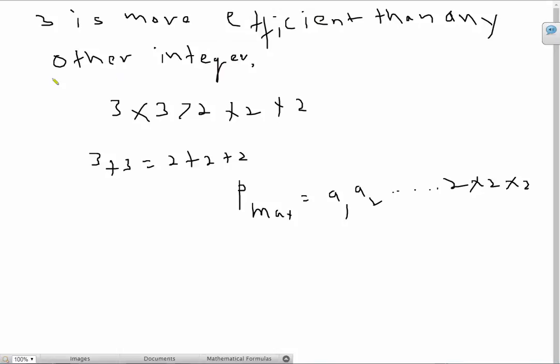So let's see, how are we going to prove this? Well, in the case of the 2, we had 3 times 3 is greater than 2 times 2 times 2, and 3 plus 3 is equal to 2 plus 2 plus 2. So anyway, let's proceed.